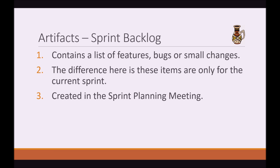The sprint backlog contains a list of features, bugs, and small changes as well, but the main difference is these items are only for the current sprint. This sprint backlog is created in the sprint planning meeting.